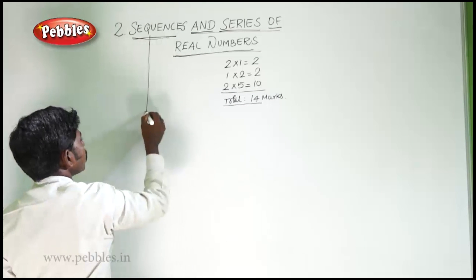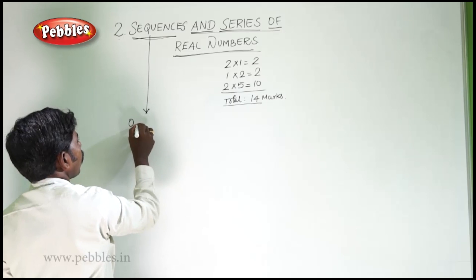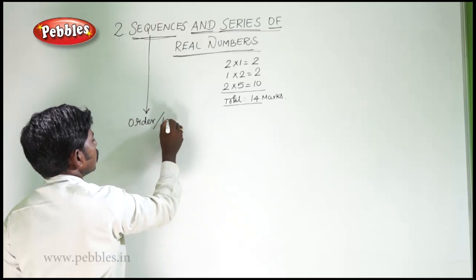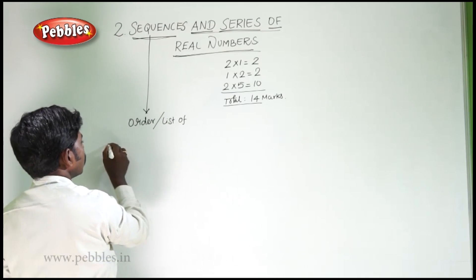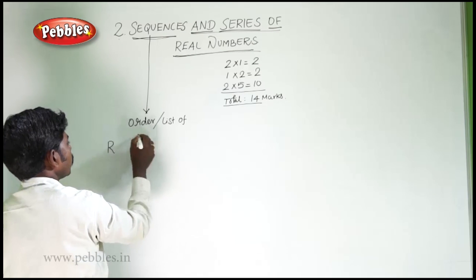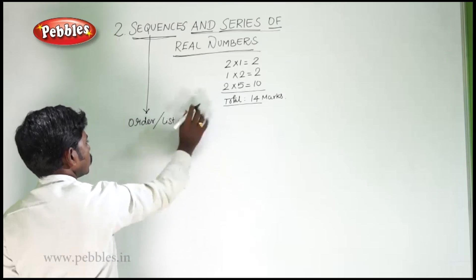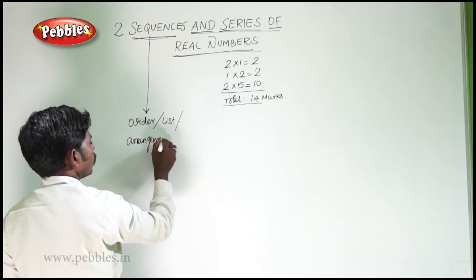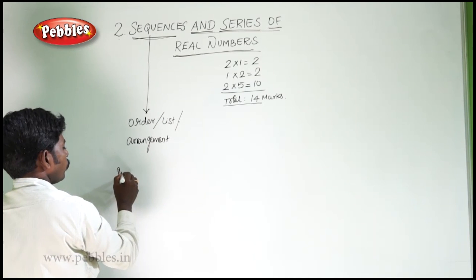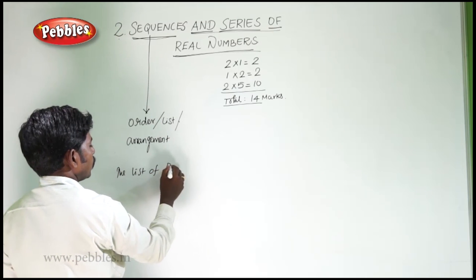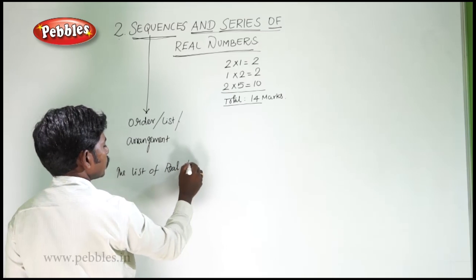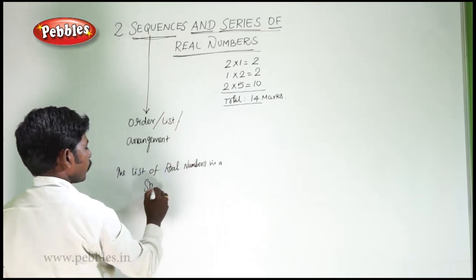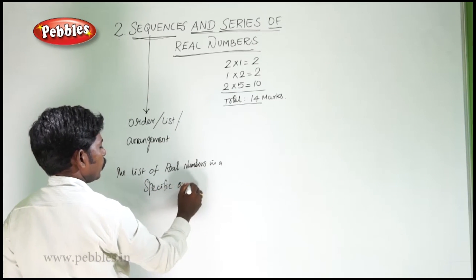The sequence means an order or a list or arrangement. The list of real numbers in a specific order is called a sequence.